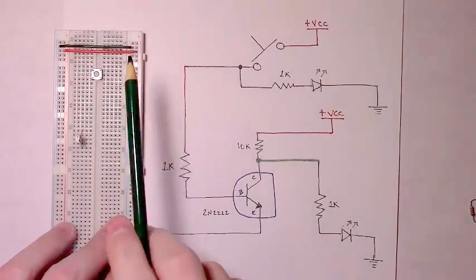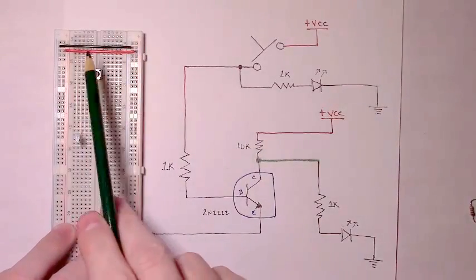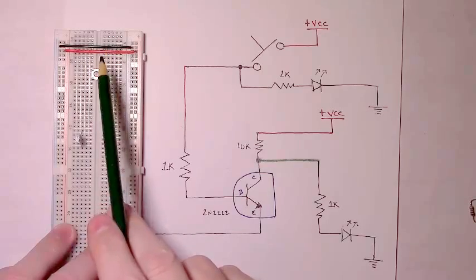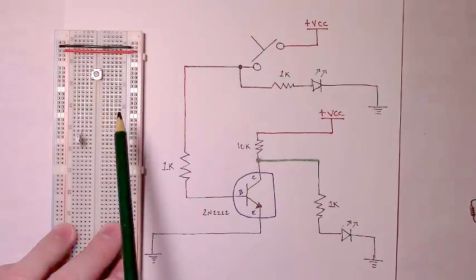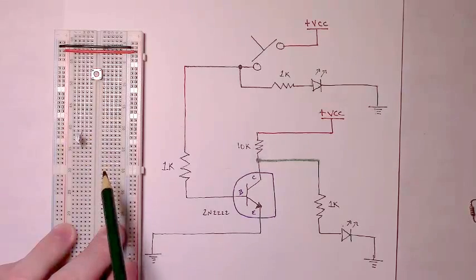Setting up our breadboard, all I've done is connected both the power rails, the left and the right, through these two wires. I've added a single momentary button, a normally open momentary button to the board, and our NPN transistor.